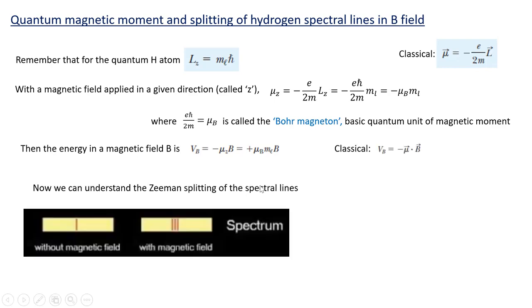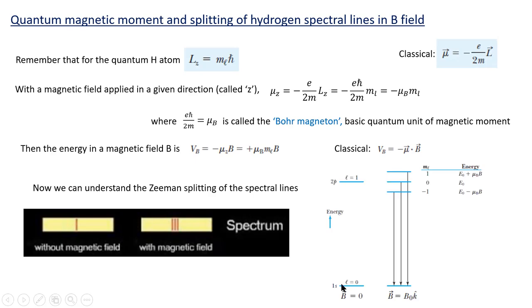Now we can understand the Zeeman splitting. Without any magnetic field we have a single line; with a magnetic field we see three lines. Looking at an energy diagram: in zero magnetic field the ground state is the 1s state (n=1, l=0), and the excited state is n=2, l=1. Without any magnetic field there's only one energy level for that excited state, but there are three m_l states associated with l=1: m_l = +1, 0, and −1. They're all packed into one level — a three-fold degeneracy.